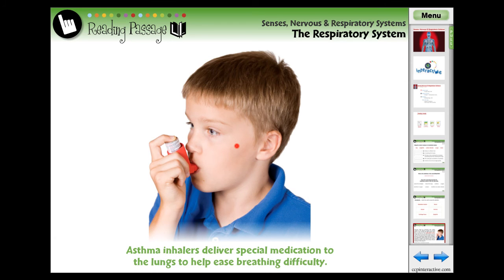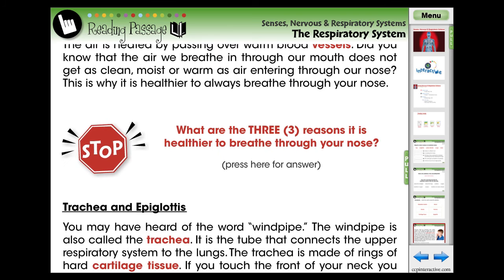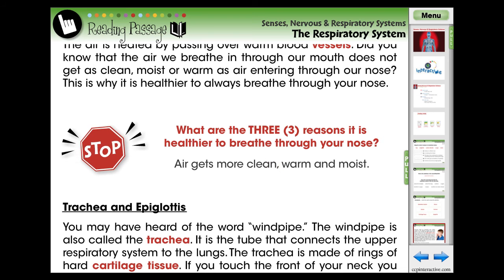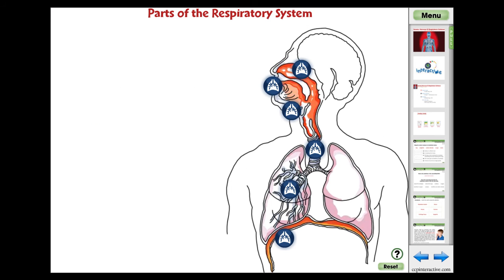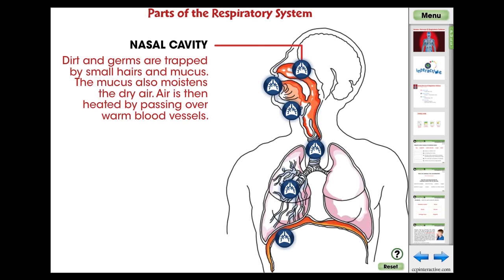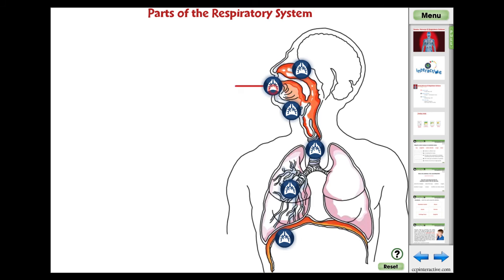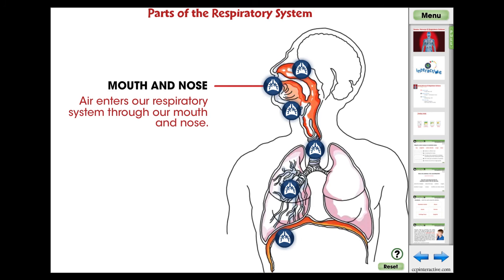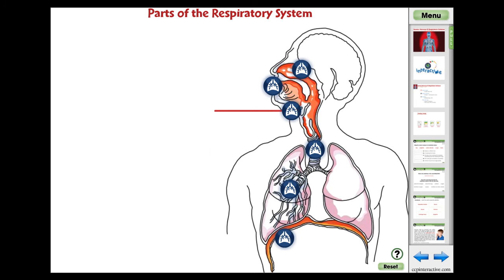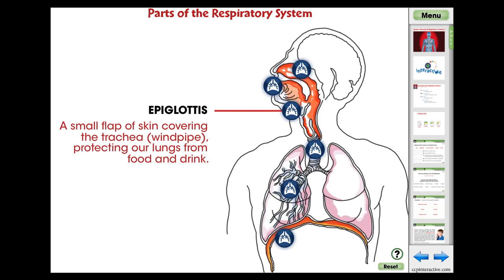A stop cue is provided to ensure students comprehend the content before continuing. The Parts of the Respiratory System activity is an engaging mini to support the comprehension of the content in the reading passage. Students touch the different parts of the respiratory system to reveal a description.